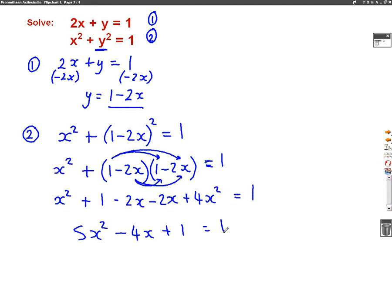Now what we tend to have to do on these sorts of questions when we're solving this, so I want to solve this quadratic, is make it equal 0. So we're going to take away 1 from both sides. That will make it equal 0. So that will give me 5x squared minus 4x, because the takeaway 1 will cancel out, equals 0.